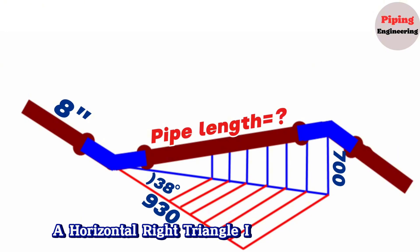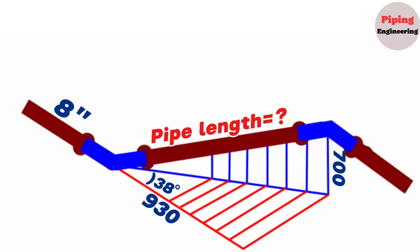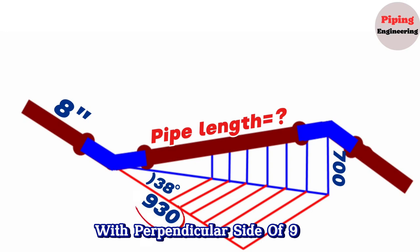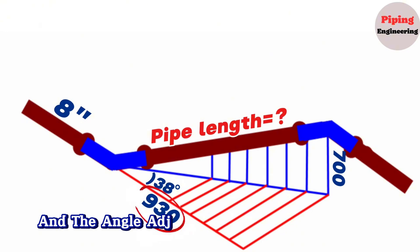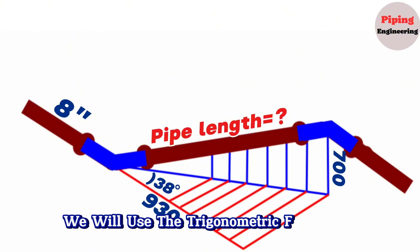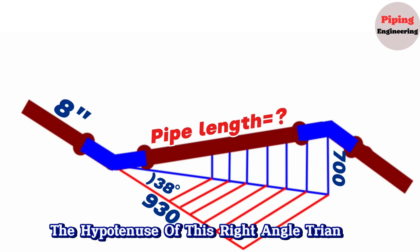A horizontal right triangle is shown in red and a vertical right triangle in blue. Let's find the hypotenuse of the horizontal right triangle with perpendicular side of 930mm, where the angle adjacent to the hypotenuse is 38 degrees. We will use the trigonometric function formula in such cases to calculate the hypotenuse of this right-angle triangle.